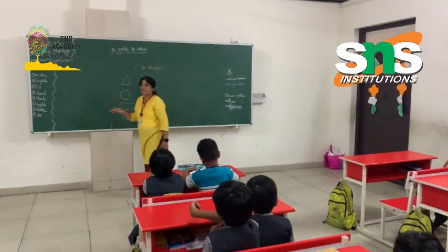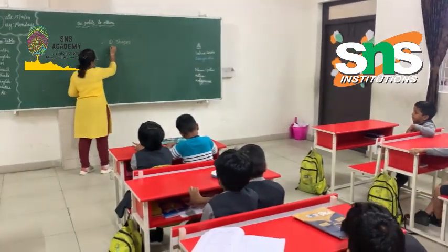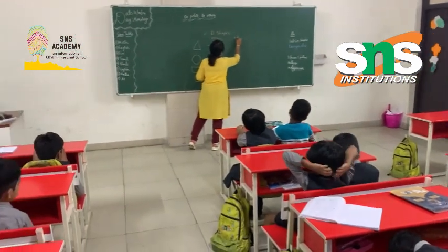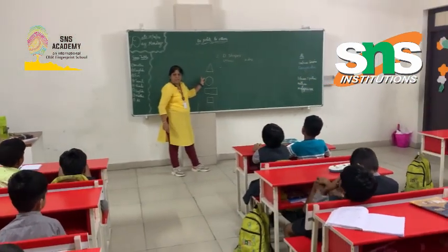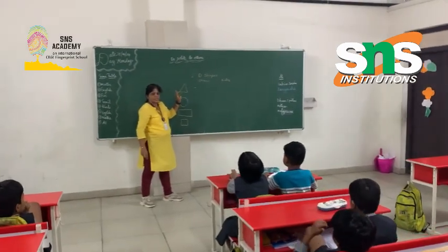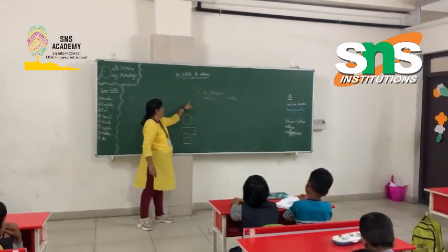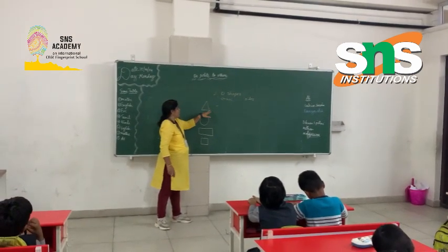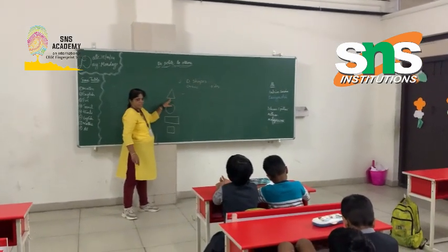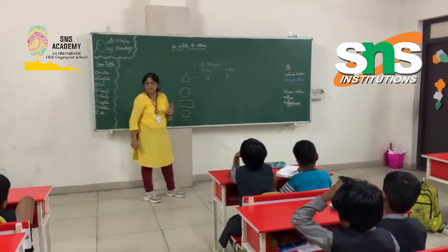Let us see the different characteristics of these 2D shapes. The triangle — it has how many corners and how many sides? This shape is a triangle. It has three sides and three corners. You can see here, two lines are joining together — that is called a corner. The triangle has three sides and three corners.